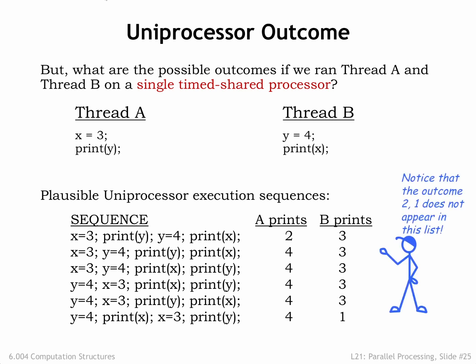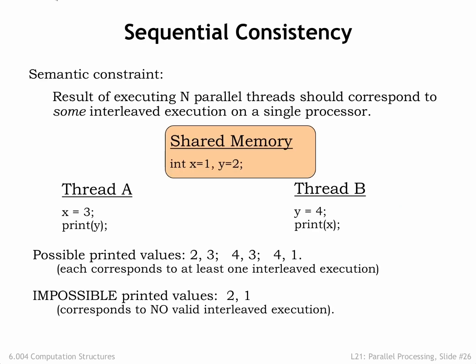Notice that the multi-core outcome doesn't appear anywhere on the list of possible outcomes from sequential timeshared execution. The notion that executing n threads in parallel should correspond to some interleaved execution of those threads on a single core is called sequential consistency. If multi-core systems implement sequential consistency, then programmers can think of the systems as providing hardware-accelerated timesharing.